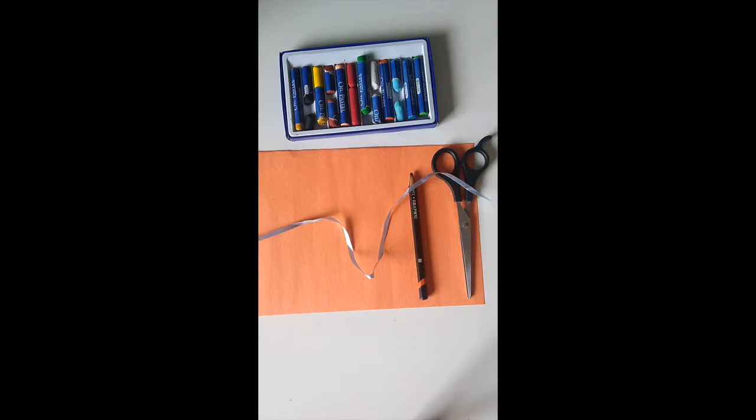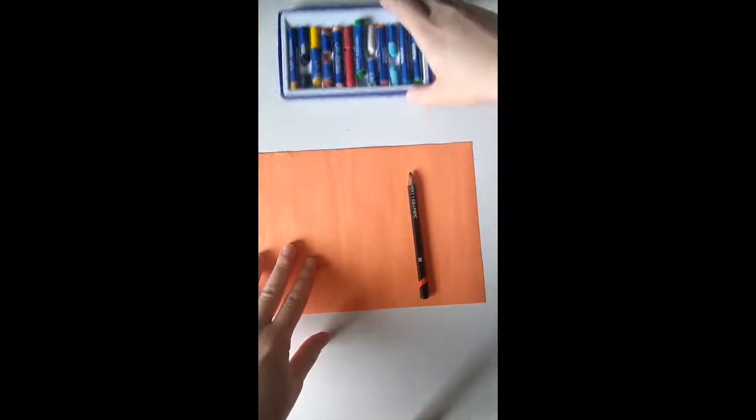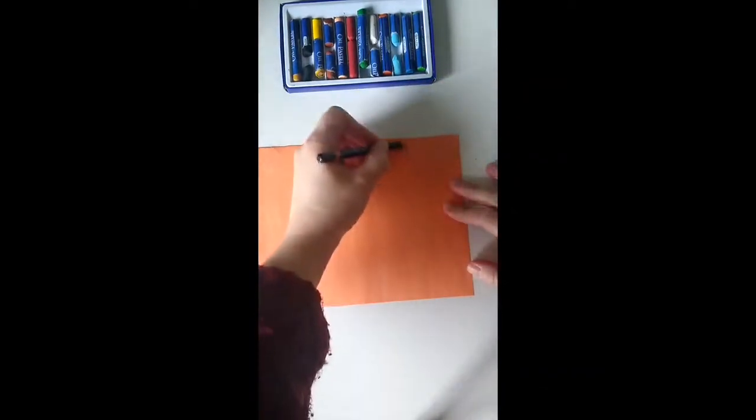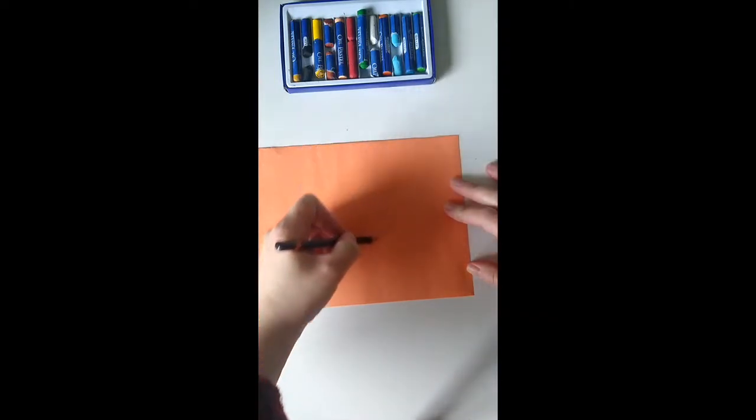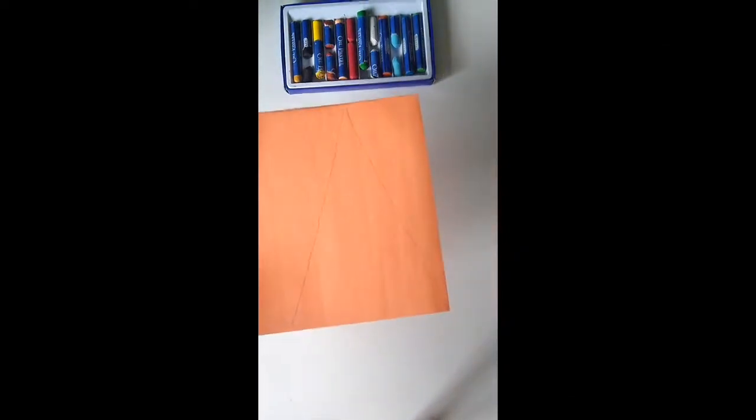So for this first project, we're going to need some construction paper, a pencil, some scissors, and some crayons, or you can use paint. And so first we're going to draw a triangle, and we're going to cut it out. So try to make maybe the size of your two palms. Something like this.